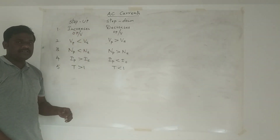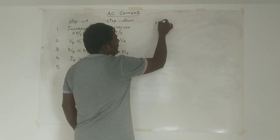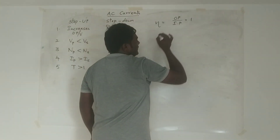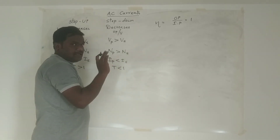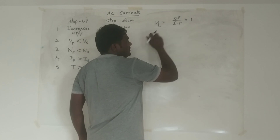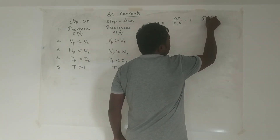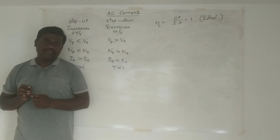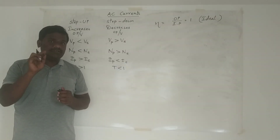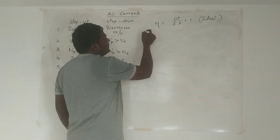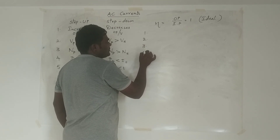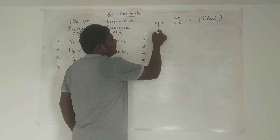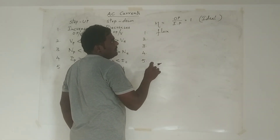Efficiency is defined as output power divided by input power. As per the ideal transformer statement, efficiency should be equal to 1. If any transformer has an efficiency equal to 1, it is called an ideal transformer. However, in practice, you will never find a transformer whose efficiency equals 1. The reason is there are five causes of energy loss, which I will now explain.